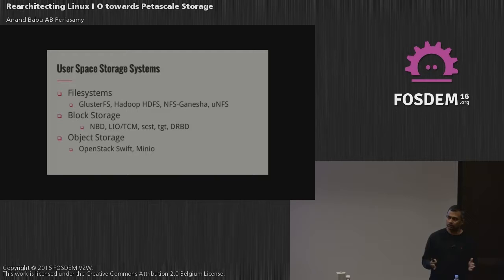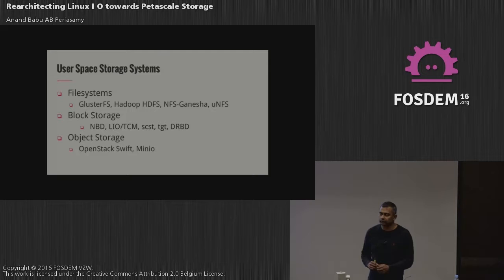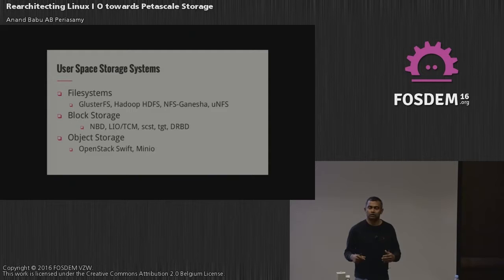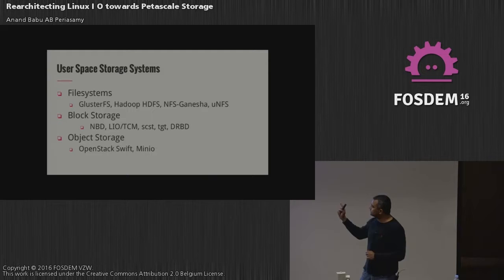File systems are not the only part. There are different types of systems to manage large amounts of data: block storage, file systems, and a new category called object storage. Object storage is somewhere between file systems and block storage — more closer to file systems but without POSIX semantics. It's a simpler interface: just get, put, and list over HTTP. These three are emerging as the major interfaces for storing large quantities of data.